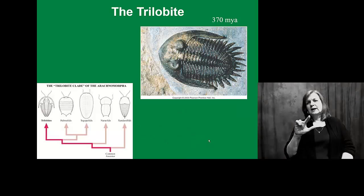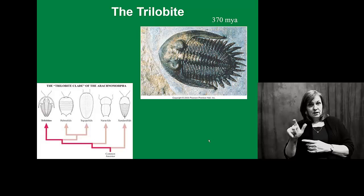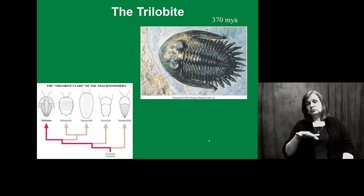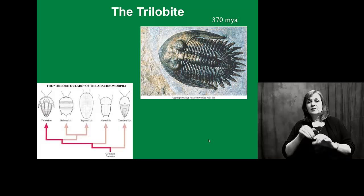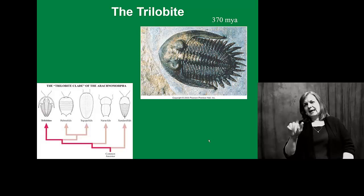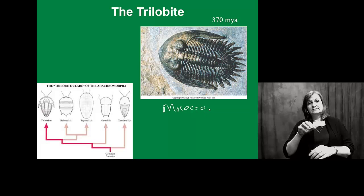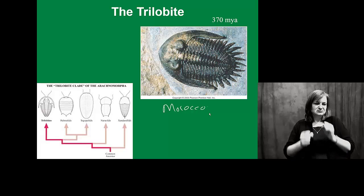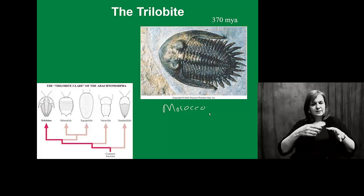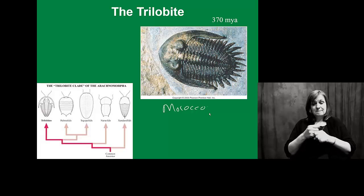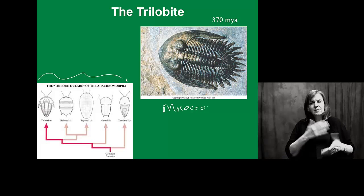This is a trilobite, for those of you who may be familiar with this fossil. Many of them are found in Ohio and the Midwest — huge numbers of them. This one is about 370 million years old, and they are often found in rock strata and dated by a process known as radioactive decay, which we'll talk more about later. This particular fossil was actually found in Morocco. Many of them today can be found simply by digging in rocks near road cutouts, where they've cut out for highways. We want to think about how this trilobite might have changed over time.